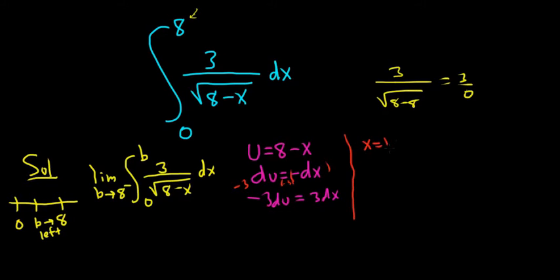When X is equal to B, that's the top limit of integration, U is going to be 8 minus B. You just take the B and plug it in. And then when X is equal to 0, U is equal to 8 minus 0. So U is equal to 8. Just taking the numbers and plugging them in here to make our sub.